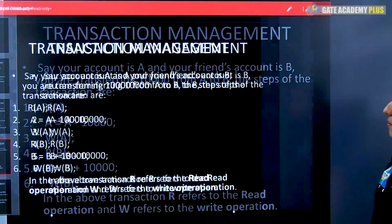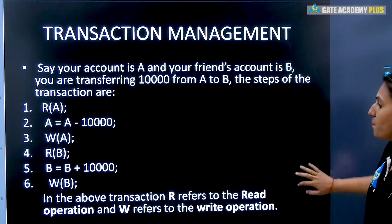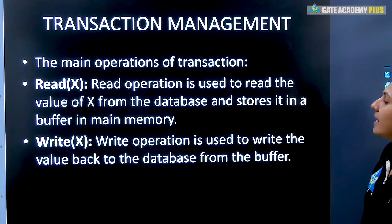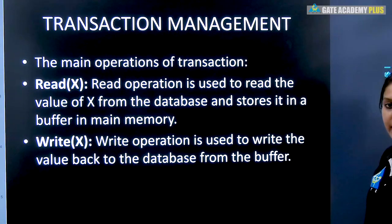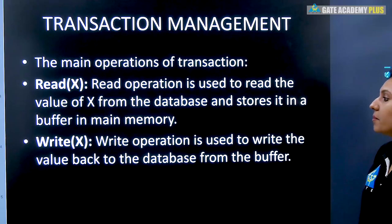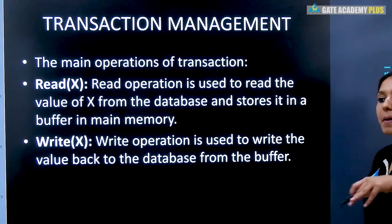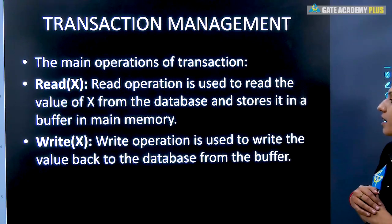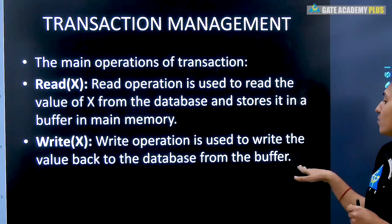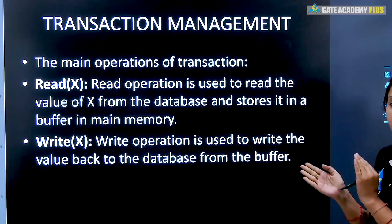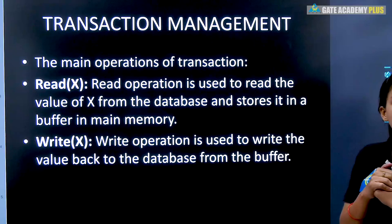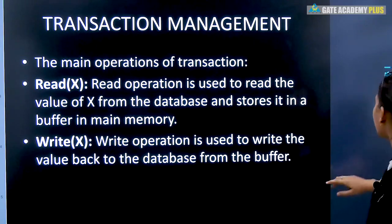In a transaction, R refers to the read operation and W refers to the write operation. The read operation is used to read the values of X from the database and stores it in a buffer in main memory. The write operation writes the value back to the database from the buffer — through the buffer and through memory, the value goes back to the database.